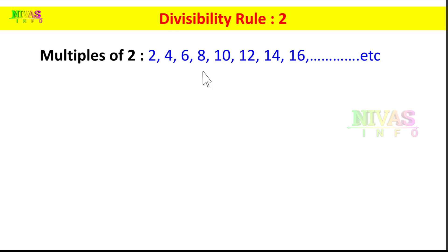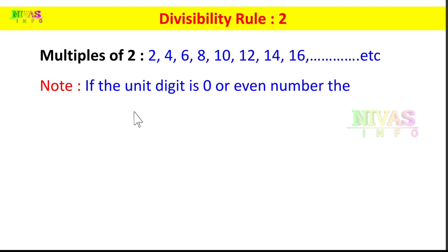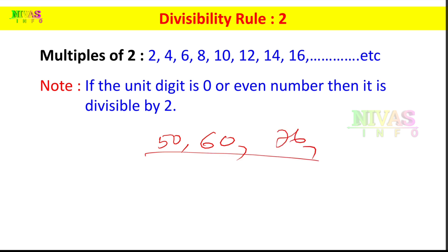What is the meaning of multiples? That means the numbers are divisible. There are many even numbers. If the unit's digit is 0 or an even number, then it is divisible by 2. All even numbers are divisible by 2.